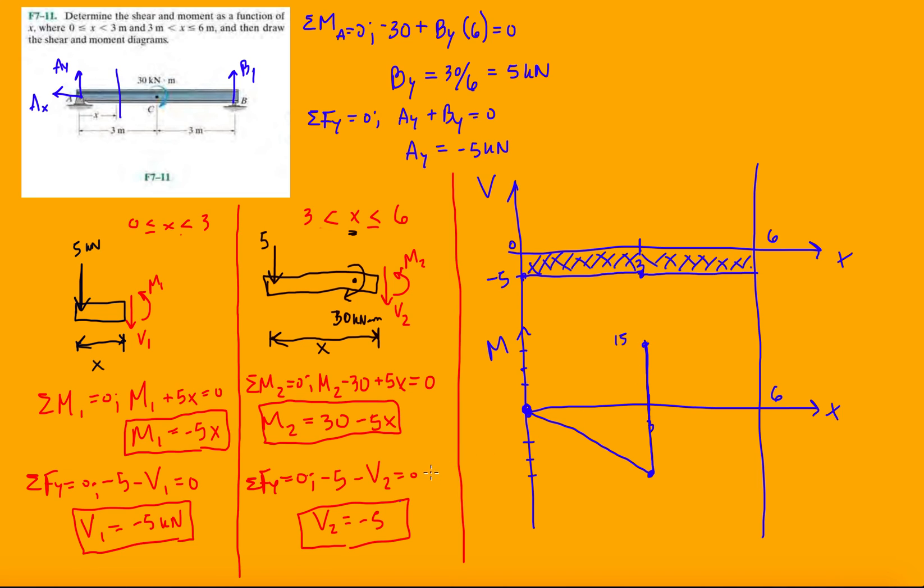And then just like I said before, at the ends of the beams, the free ends, we should have zero moment. And we have zero moment there. So evaluating this at 6, that's 30 minus 30 and that's zero. And then we're done.